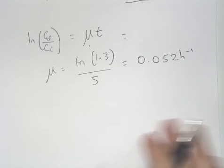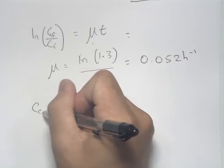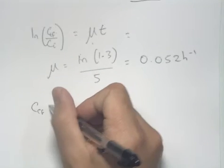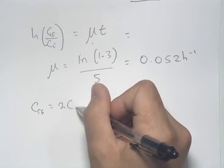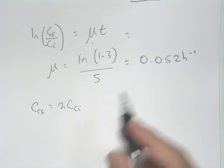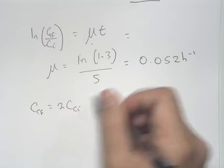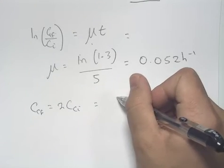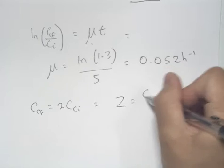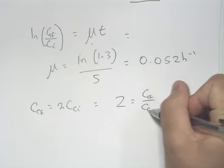For our cell doubling time, we know that the final concentration, CCF, is equal to 2 times the initial cell concentration, CCI. And so our ratio of these two values becomes 2 equals CCF over CCI.